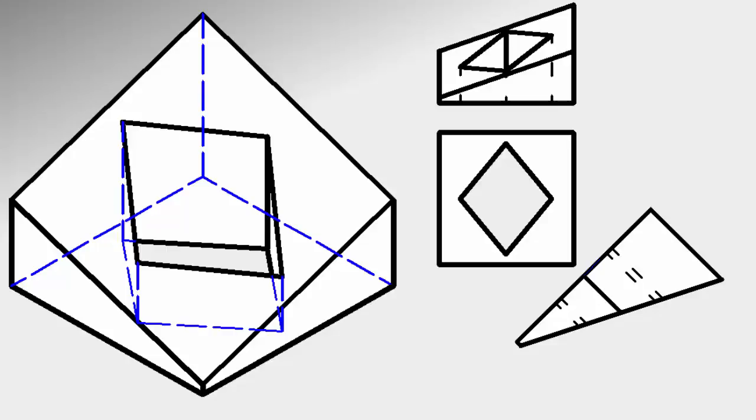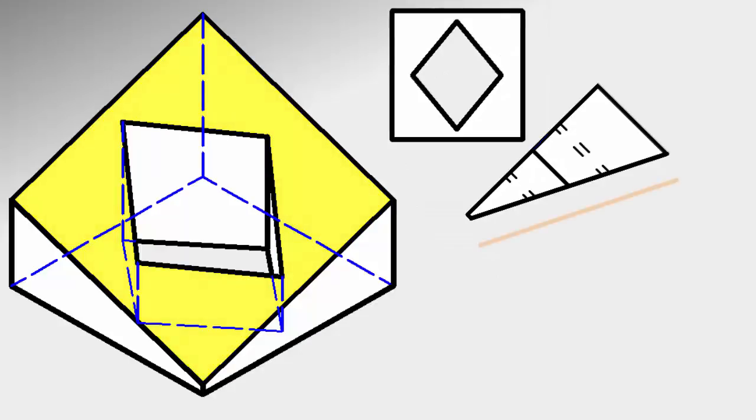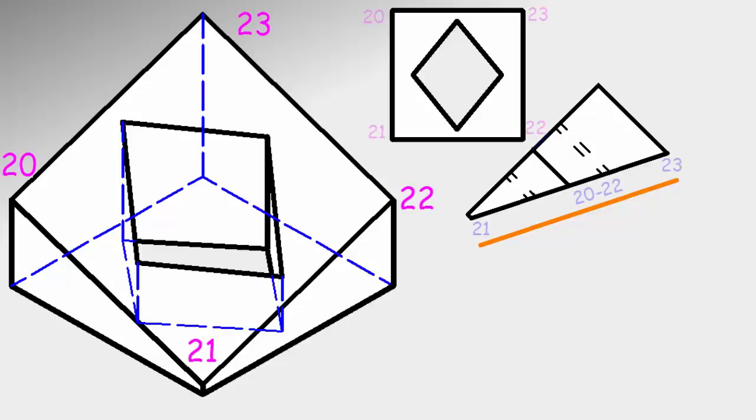The last step is to draw the second auxiliary view in which the oblique face will look without deformation. We establish a new reference line parallel to the face. As what interests us most is the oblique face, we do this first.